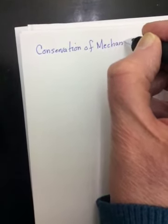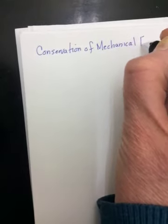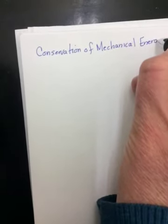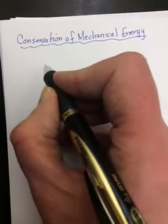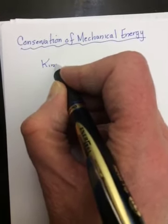It was called the conservation of mechanical energy. Remember this? Conservation of mechanical energy. So in grade 11 we learned that there were three different types of mechanical energy that we used.